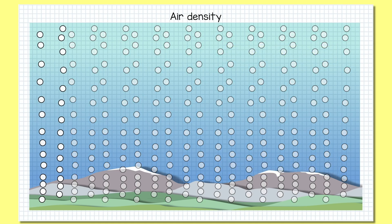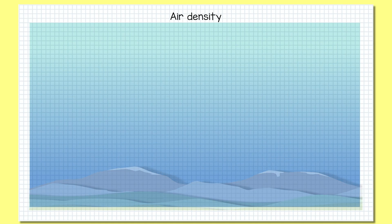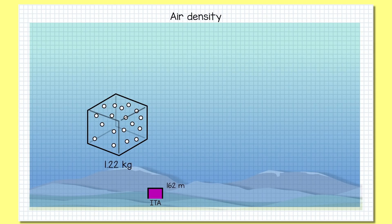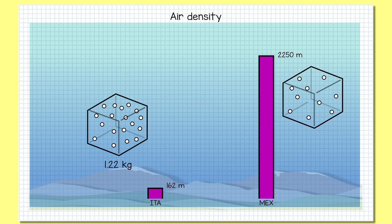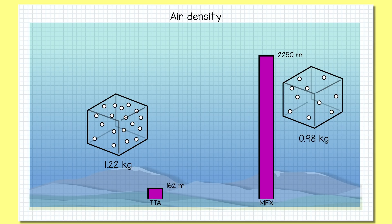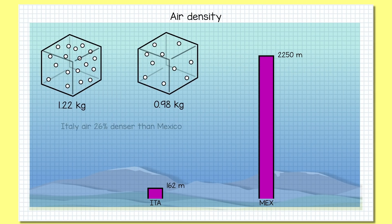In the same amount of space, higher density air has more molecules in it than lower density air. If you grabbed a cubic meter of air at Monza, which is only 162 meters above sea level, that air would weigh a robust 1.22 kilograms. But if you went to the Mexico circuit and grabbed that same cubic meter of air, it would only weigh 0.98 kilograms. The air at Monza has 26% more stuff in it than the air at Mexico.